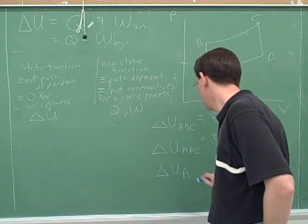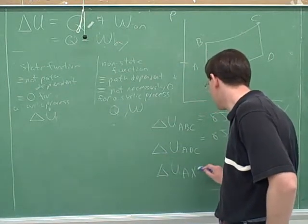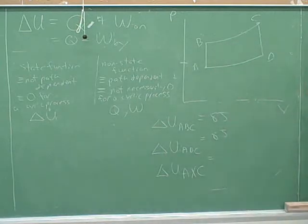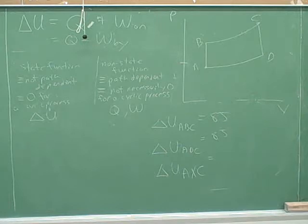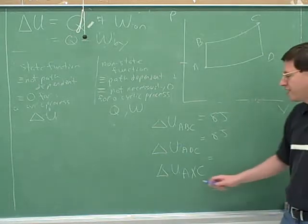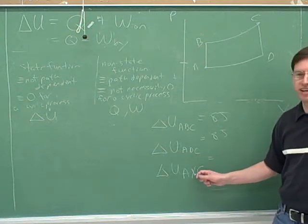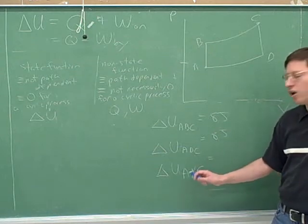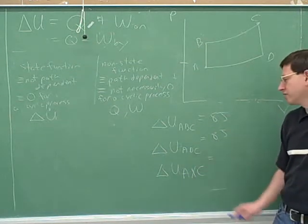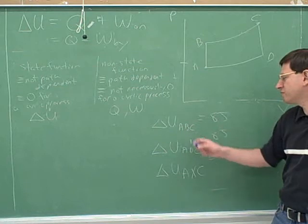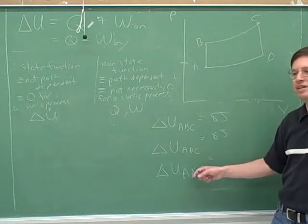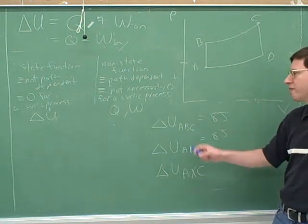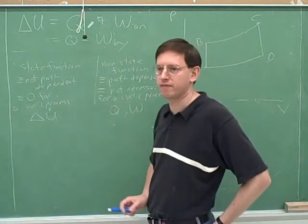What would be the delta U from A to X to C? Even though I haven't told you where X is, it doesn't matter where X is. Remember that for a state function, all that matters is the initial and the final points. It's a complete waste of time to even write in these middle letters, because all that matters for delta U is the initial and the final points.